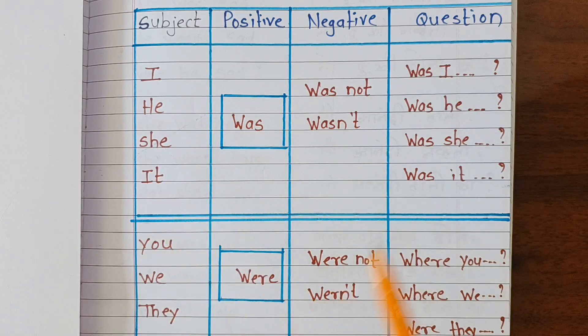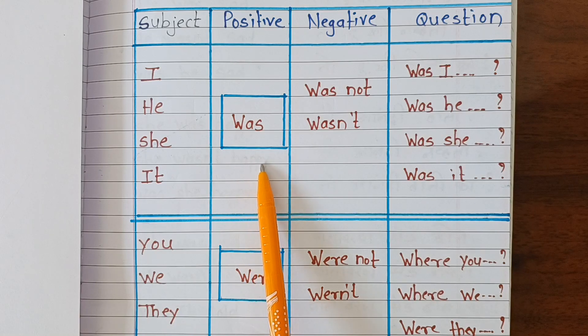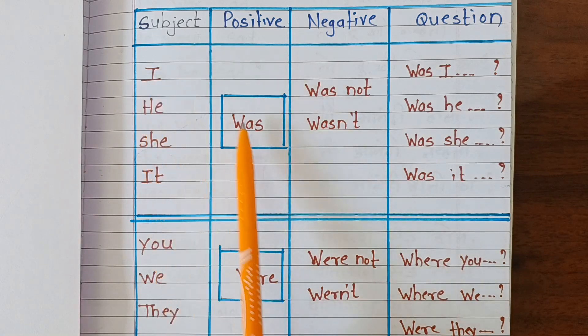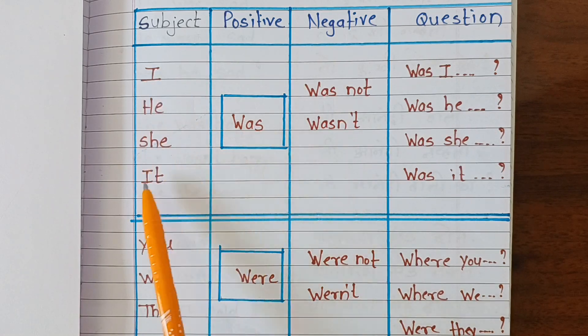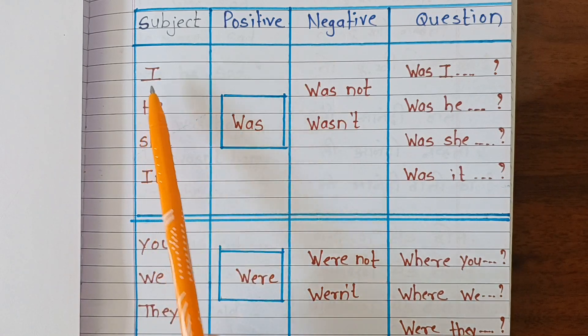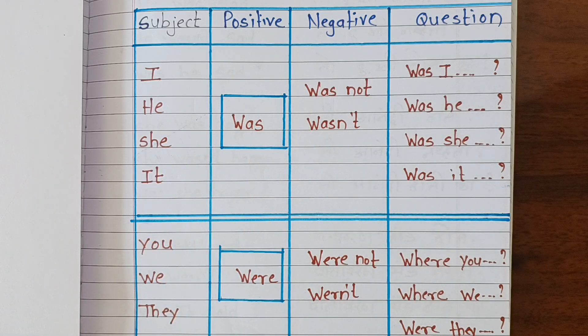I was, he was, she was, it was. You was, we was, they was.